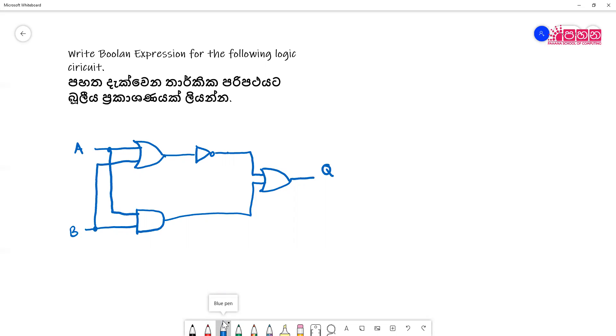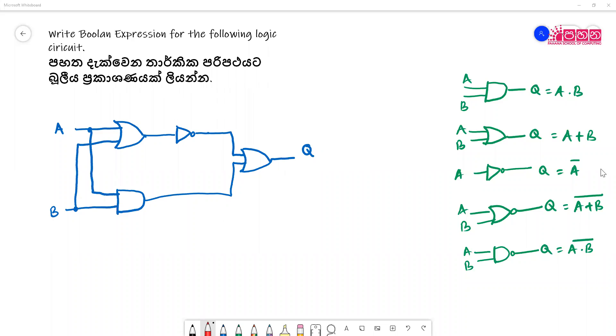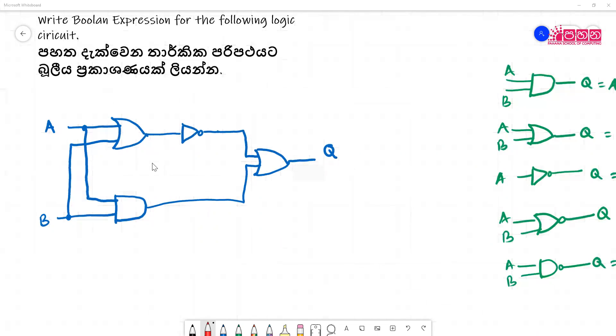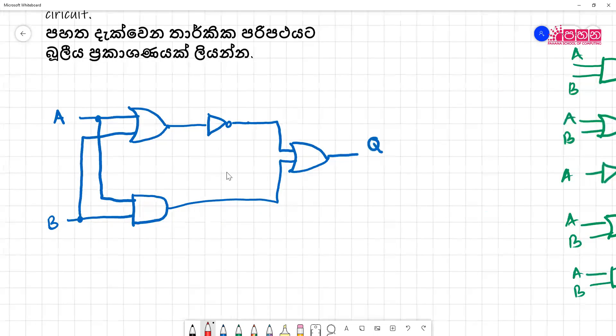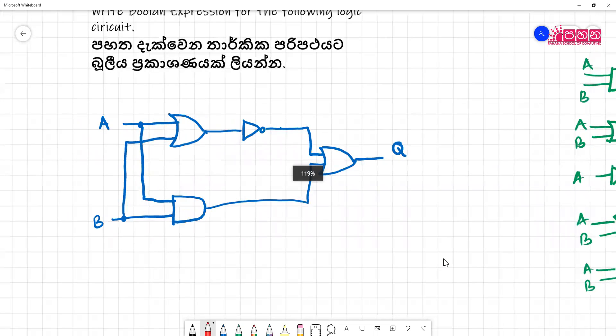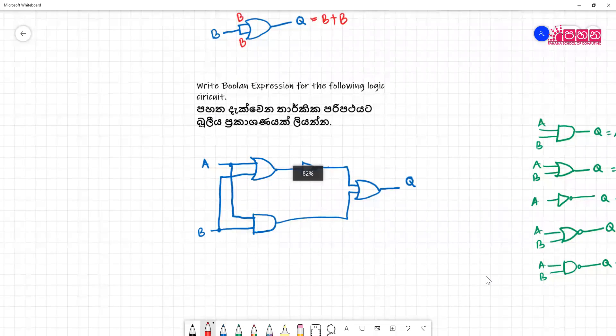First thing I want you to write a Boolean expression. So let's write a Boolean expression. Let's look at the answers. We have OR gate and here we have AND gate.